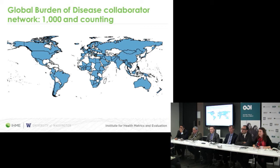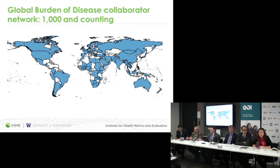The global burden of disease network is very strong because of its collaborators. We currently have a thousand different collaborators worldwide and we're seeking to add expertise. These experts contribute their knowledge of specific diseases or health patterns in a given country, help us identify data gaps where we may not be aware of certain data, or provide us access to data that makes the study stronger.